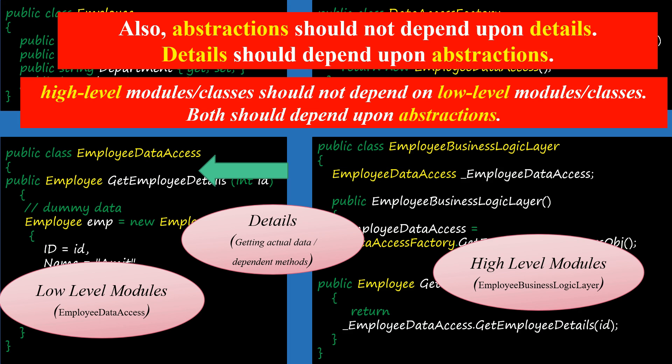Till now we are clear on three out of four confusing terms: high-level module, low-level modules, and details. I hope you are now able to relate to the definition slightly better. Let's cover the remaining part of the definition — but before that, let's understand what abstraction is.